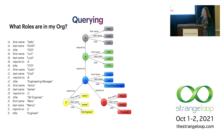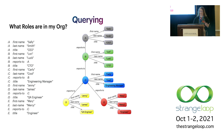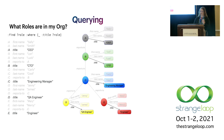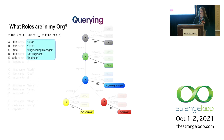For a database to be useful we have to be able to get data back out of it. For instance, I can ask what the roles in my organization are. Here's a query for that — it has a pattern in the where clause looking for something that has a title, calling it 'role'. It then projects that role out with the find clause, finding all statements matching that pattern, and the final result is the set of CEO, CTO, etc.